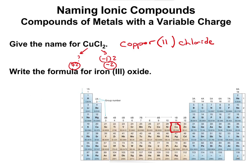Next: write the formula for iron(III) oxide. 'Iron 3' tells us iron has a plus three charge. Oxygen is negative two — oxide is negative two. To write the formula, we write Fe for iron and need two of them, giving a total charge of plus six. For oxygen, we need three of them, giving minus six. So Fe₂O₃ is iron(III) oxide.